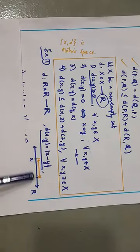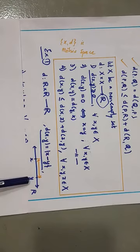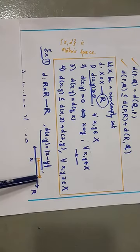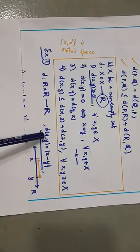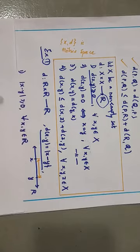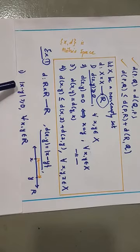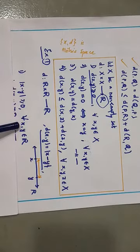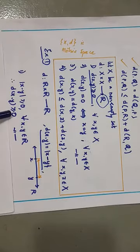Consider the real line ℝ: if we have points x and y on the real line, then |x − y| is actually the distance between x and y — this is what the function D is defined as. The first property: being an absolute value function, it cannot be negative. Therefore |x − y| ≥ 0 for all x, y ∈ ℝ, so D(x,y) ≥ 0.